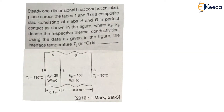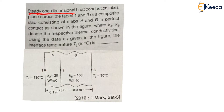Let us understand the question. The question is: steady one-dimensional heat conduction takes place across the faces 1 and 3 of a composite slab consisting of slab A and slab B in perfect contact as shown in the figure. They have mentioned it is steady and one-dimensional, therefore we will use the formulas of steady 1D heat transfer. Heat transfer takes place from 1 to 3. Temperature at 1 is 130°C and temperature at 3 is 30°C. Heat always flows from high temperature to low temperature, so the direction of heat flow will be from 1 to 3.